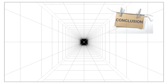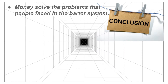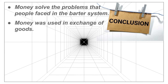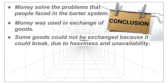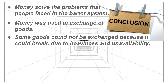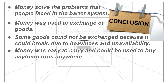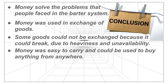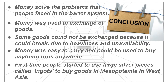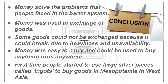So here is our conclusion — what we learned today at a glance. Money solved the problems that people faced in the barter system. Money was used in exchange of goods. Some goods could not be exchanged because they could break, or due to heaviness or unavailability. Money was easy to carry and could be used to buy anything from anywhere. For the first time, people started to use large silver pieces called ingots to buy goods in Mesopotamia in West Asia.